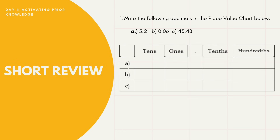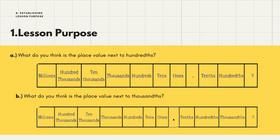Now write the following decimals in the place value chart. For 5.2, always align the decimal point first — five goes to ones and two to tenths. For 0.06, zero tenths and six hundredths. For 43.48, four tens, three ones, four tenths, and eight hundredths. So what is the place value next to hundredths? That would be thousandths. And next to thousandths is ten-thousandths.